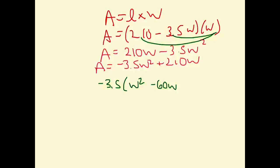So inside the brackets, I need to figure out what to add. So I'm going to take negative 60, divide it by 2, and square it to get 900. So I'm going to add and subtract 900 inside my brackets.